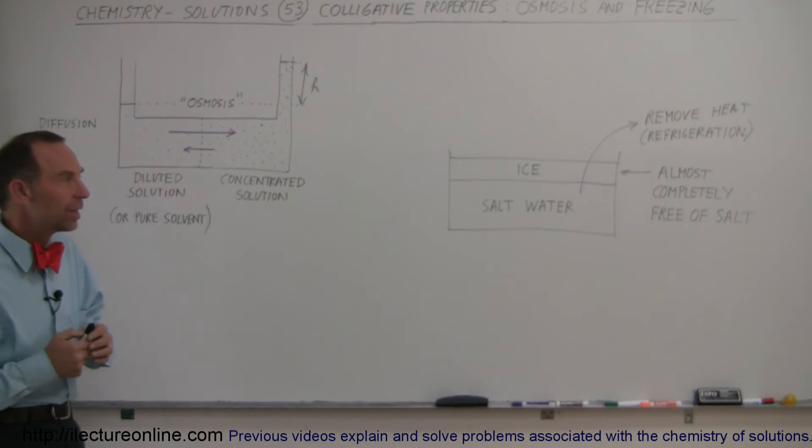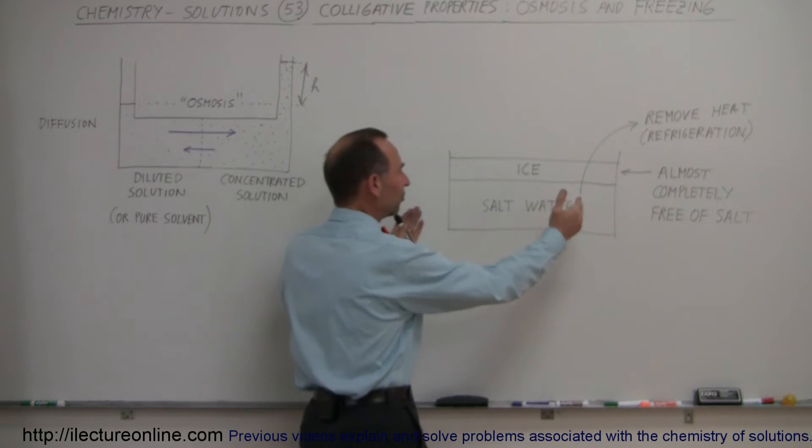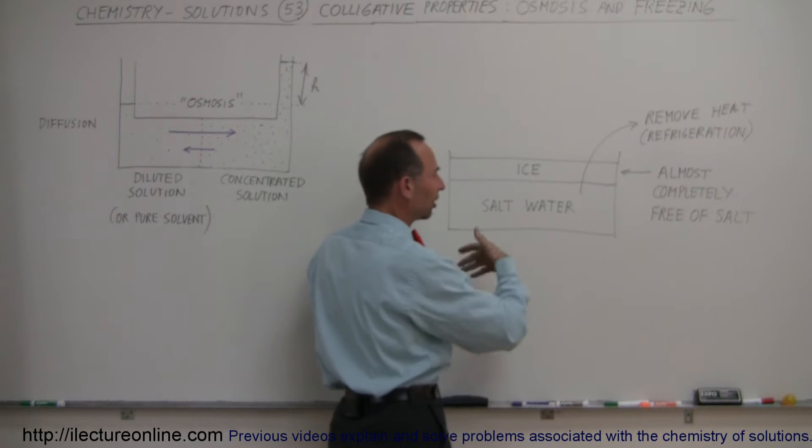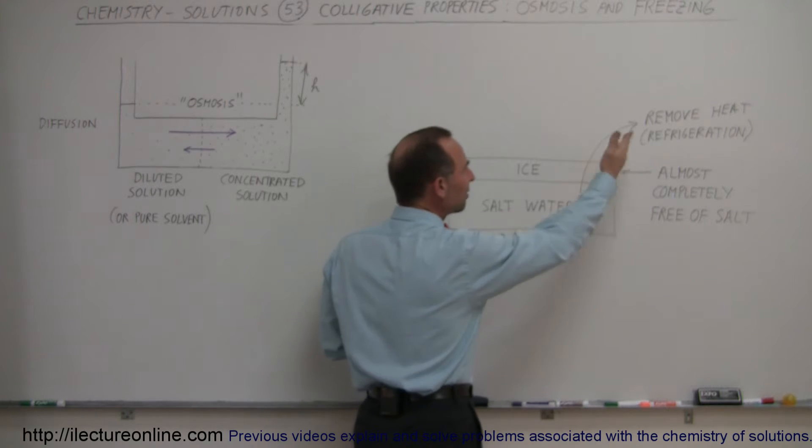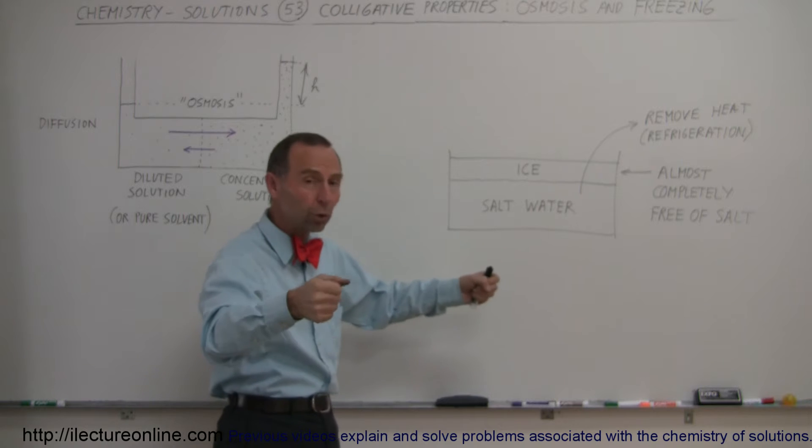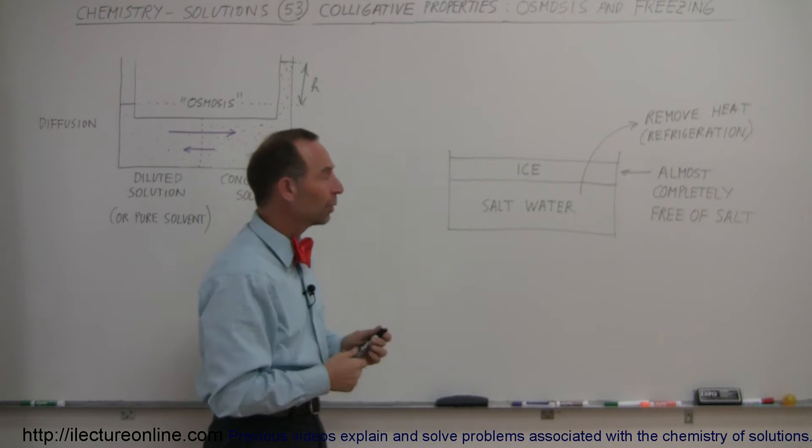And one way in which we can do that is freezing. If we simply have a batch of water like that containing a lot of salt like sea water and remove heat from it under refrigeration, put it into a big cooler and start making it really cold,